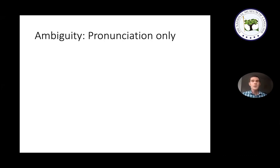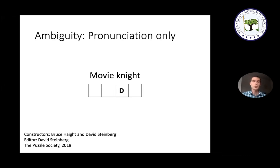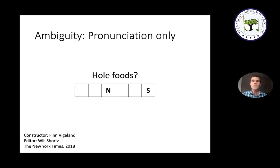A first type of ambiguity shows up only in how a clue is pronounced. An example is the clue 'Movie Knight.' Said aloud, it sounds exactly like 'movie night,' but from the spelling you can tell it means a knight in shining armor from a movie. So the answer is JEDI, because the Jedi knights are knights in the Star Wars movies.